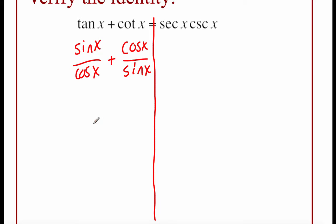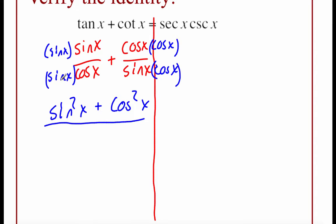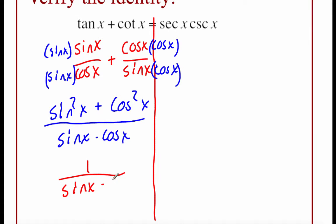In order to add these fractions together, we need common denominators. I'm going to multiply each fraction by the other fraction's denominator — on the left, multiply top and bottom by sine of x; on the right, multiply top and bottom by cosine of x. Taking care of that multiplication: sine times sine is sine squared of x, cosine times cosine is cosine squared of x, with addition between them, and a common denominator of sine of x times cosine of x. On top, that's one of our Pythagorean identities — sine squared plus cosine squared is 1 — over sine of x times cosine of x.